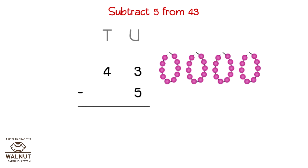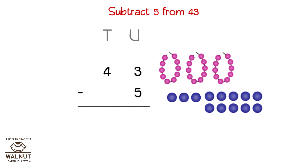Let's draw beads and show 43. We take one 10 and add it to the units, so we have three 10s and 13 units. Let's write that in the numbers too. Now we can subtract the units.